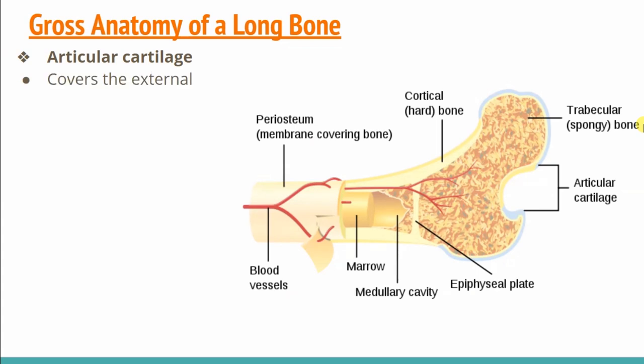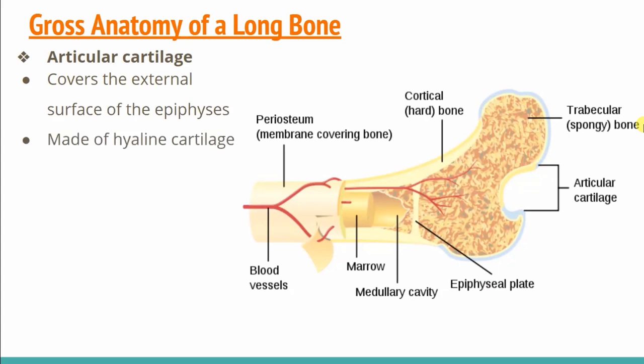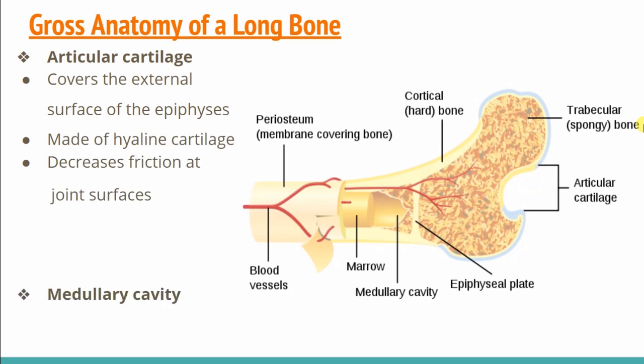The articular cartilage covers the external surface of epiphyses, made of hyaline cartilage, which will decrease friction at the joint surface. So its role is that when two bones are combined and there is any movement, it reduces the friction that would occur.